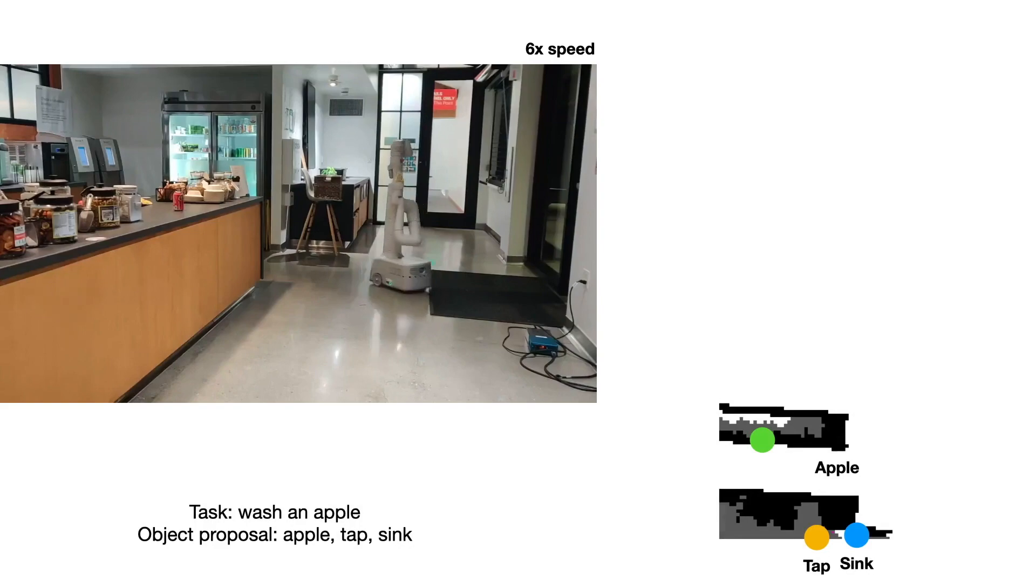The robot is now asked to wash an apple. The robot proposes three objects: apple, tap, and sink.